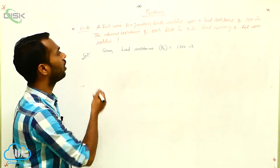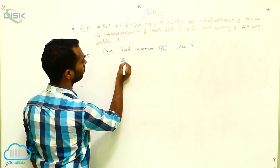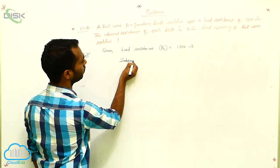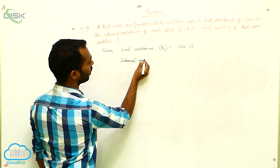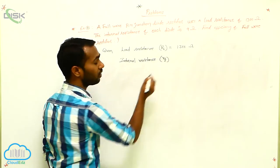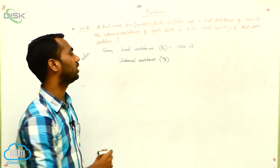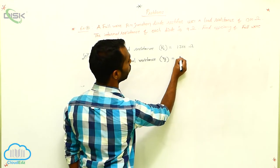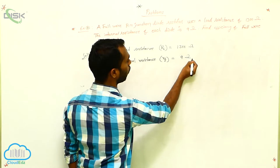And internal resistance be given. Internal resistance, or forward resistance RF, is equals to 9 ohms.